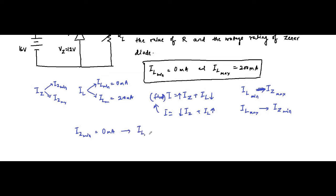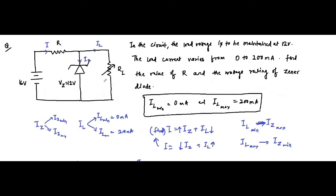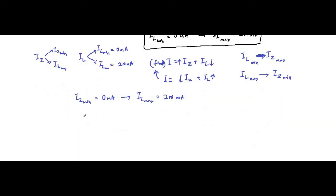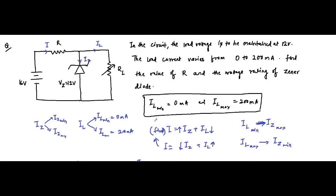When load current is at its maximum value of 200 milliamperes, no current flows through the Zener diode — IZ minimum is 0. So in this case, the current flowing through series resistance R equals IZ_min plus IL_max, which is 0 plus 200 milliamperes, giving 200 milliamperes total. Now we apply KVL in this loop.